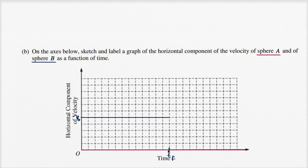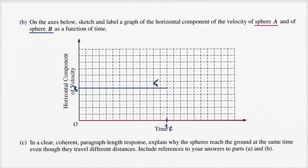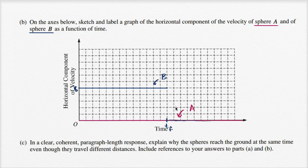Right when Sphere B hits the ground, the force that stops it is essentially friction, and its horizontal velocity very quickly goes down to zero. You could label this line as Sphere B, and the flat line at zero as Sphere A. Sphere B drops to zero after t sub f — it's not continuing to move to the right, or at least they don't tell us anything about that.